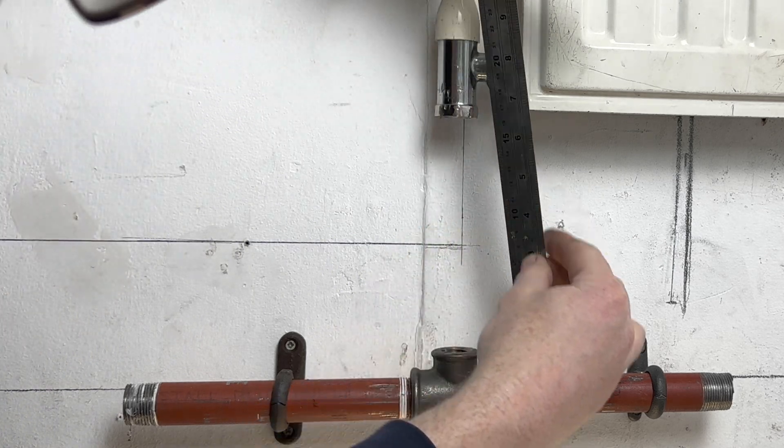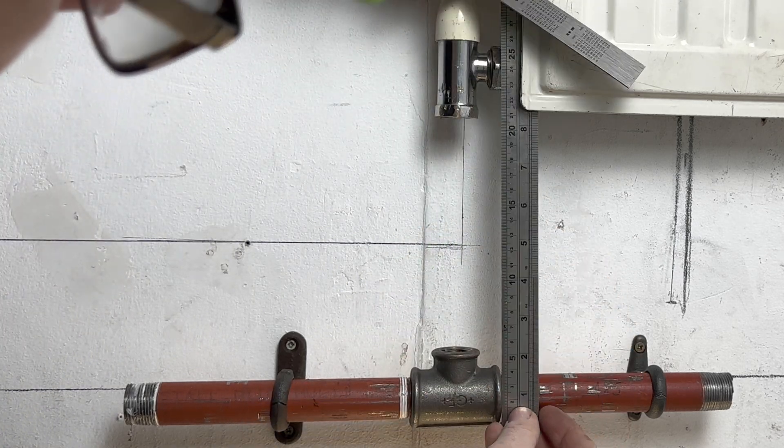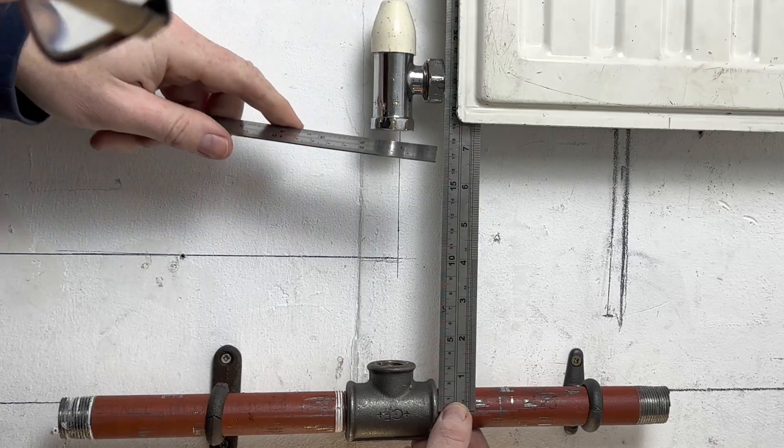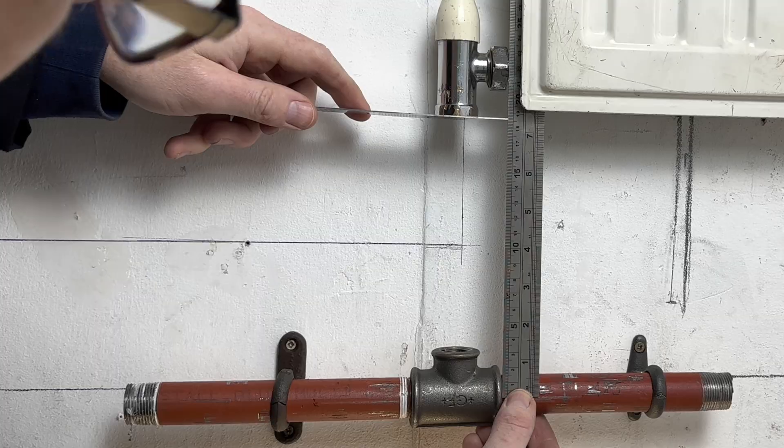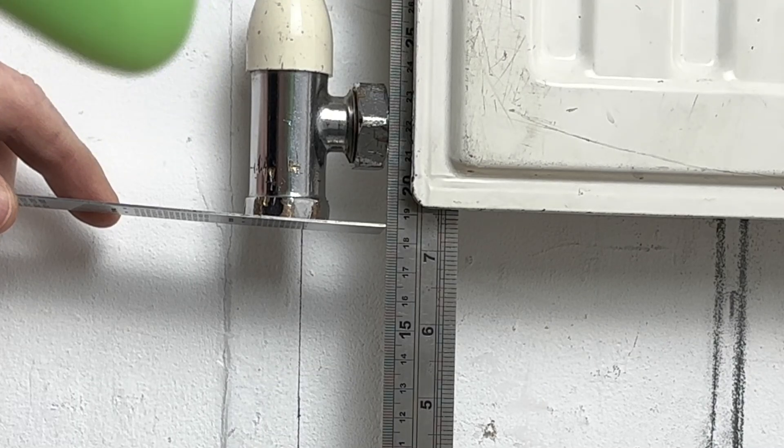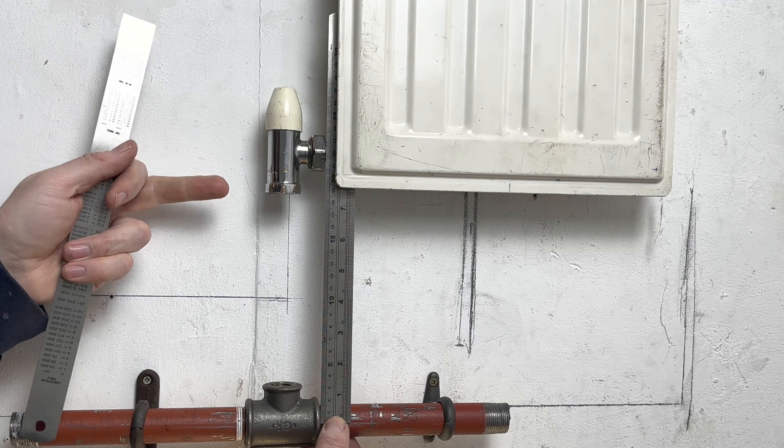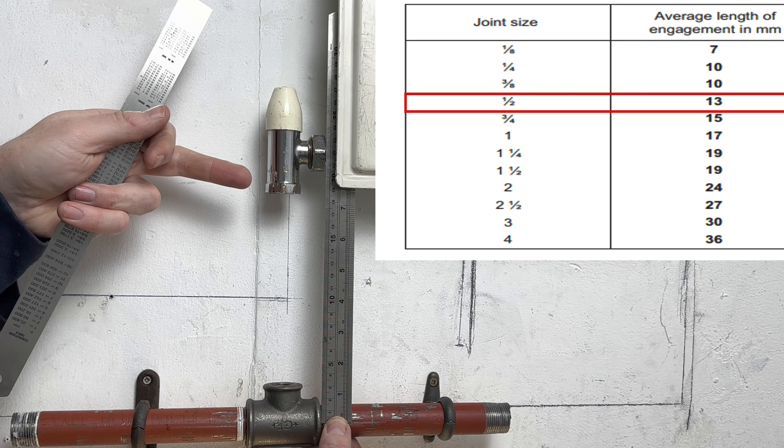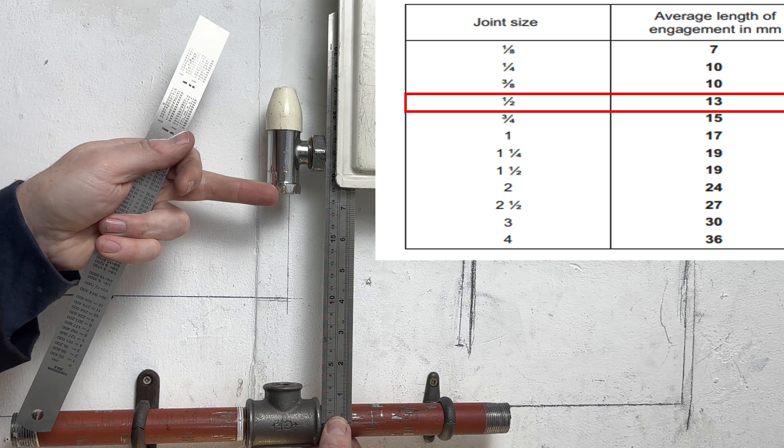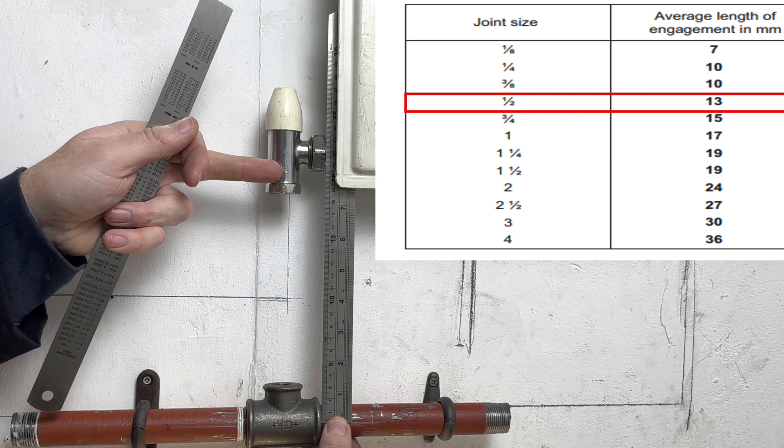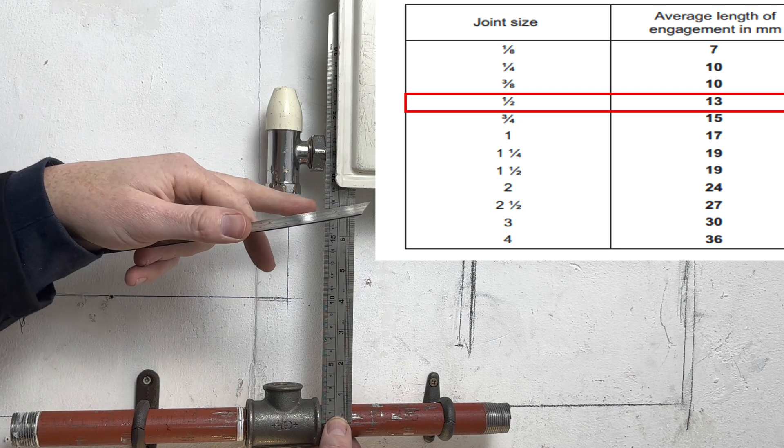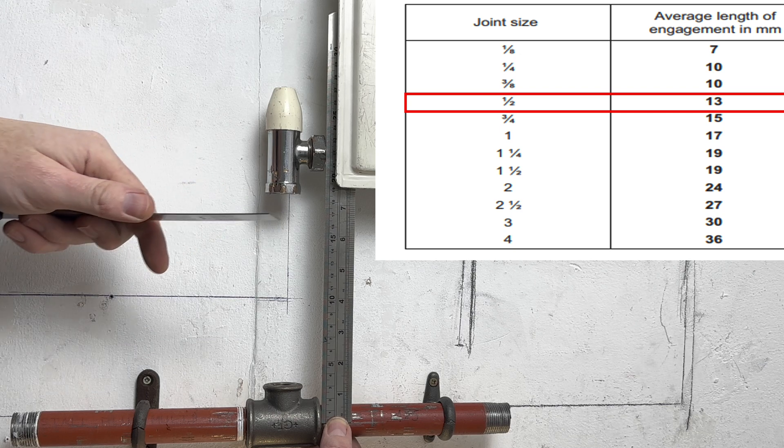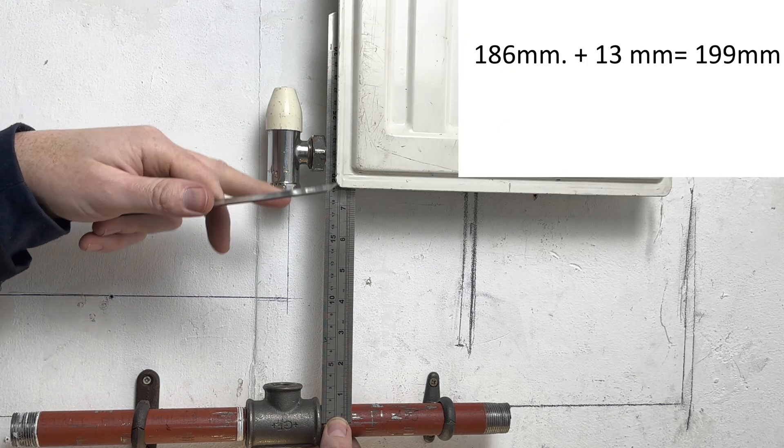So what we do is from the centre of the pipe, we measure to the top. So it's 186mm. Low-carbon steel goes in, half-inch pipe goes in 13mm. So what we then do is 186mm plus 13mm equals 199mm.